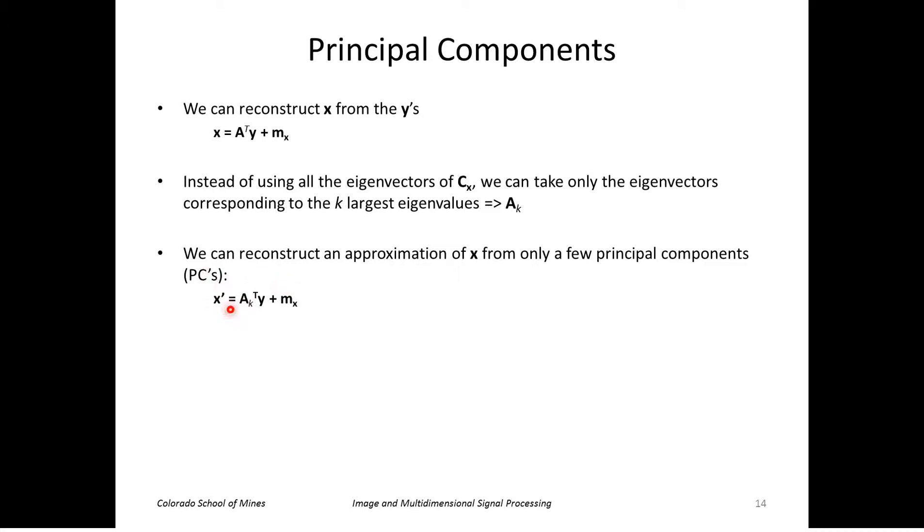So then I can reconstruct an approximated version of x by taking that A sub k transpose times the first k elements of y and again adding the mean of x. To represent the input data approximately, I just need the first k elements of y.